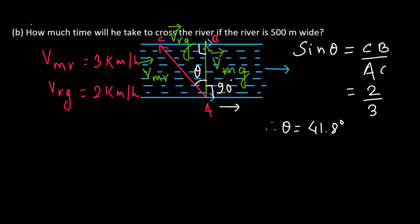The angle his body makes with the direction of the river flow will be equal to 90 plus theta. That is equal to 131.8 degrees. So, we have found the solution to the first question.